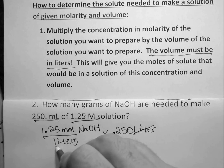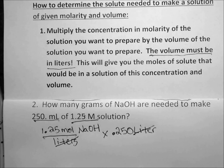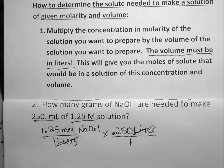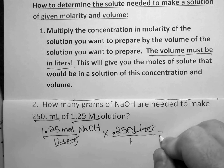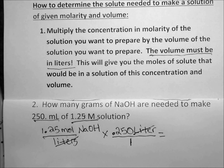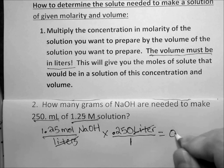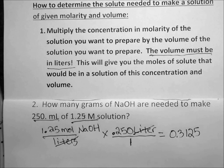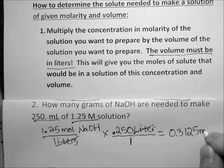The liters cancel out — liters on top, liters on bottom. You can put this over 1 so you see a numerator and denominator, but you don't have to. Multiply those two numbers together and you get 0.3125 moles of NaOH.